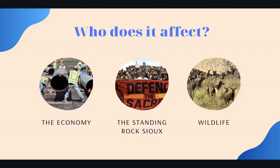Our last group that this could affect is the wildlife within these areas. Because of the construction and building of the pipeline, this could force animals to move from their homes. But also, if there is a leak or if the pipeline bursts, it would flow into the soil beneath the earth, flow into the water and poison it. That would ruin the food and water supply for these animals and could potentially kill them.